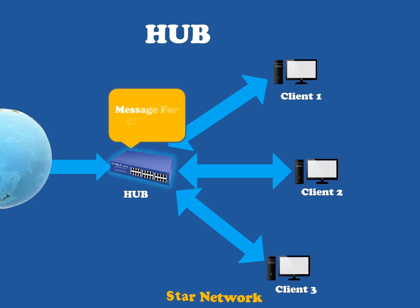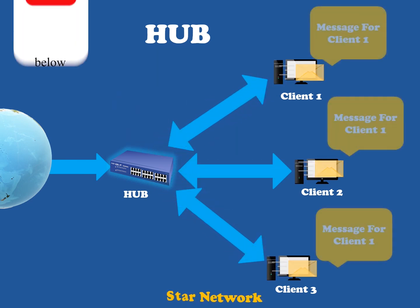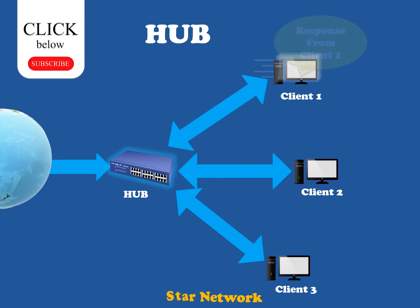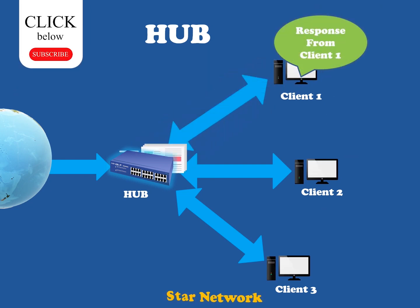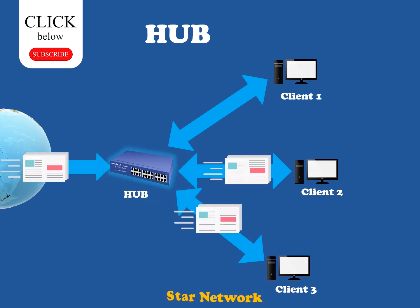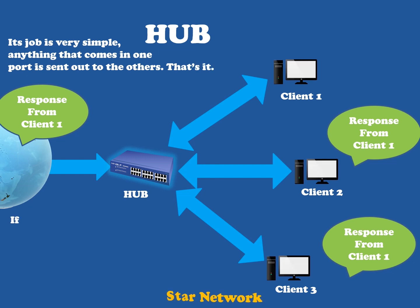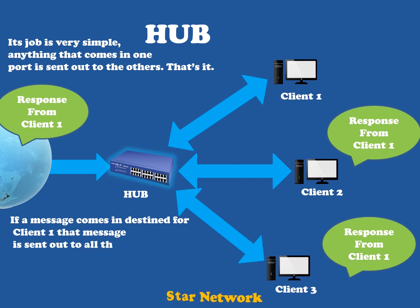A hub is the least, least smart, and least complex of the three. Its work is very simple: whatever comes in one port is sent out to the others. If a message comes in destined for client one, that message is sent out to all the other ports, regardless of which client one is. Once client one responds, its reply also goes out to all other ports on the hub.